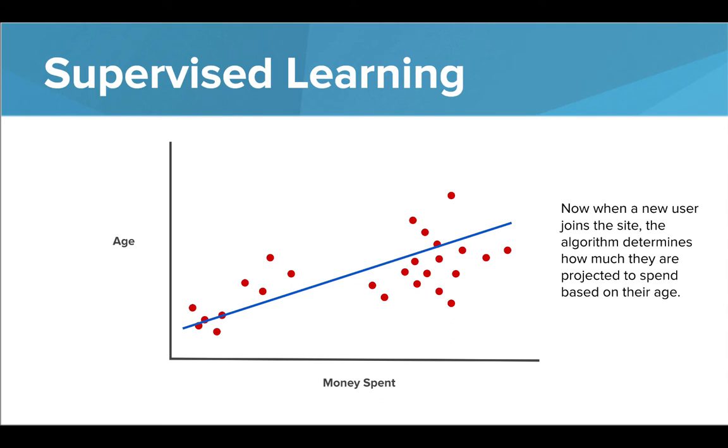When a new user joins the site, the algorithm is now able to determine how much money they are most likely to spend based on their age. When the user enters their age, the program is able to match that age with a particular spending habit based on its existing data. Depending on their spending, they can recommend different products or pricing options to that user.